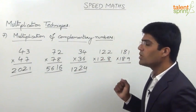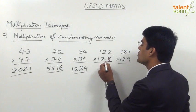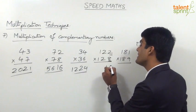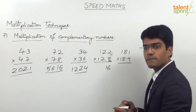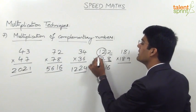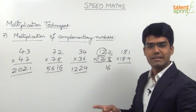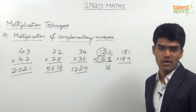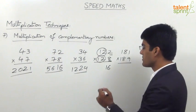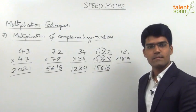For 122 into 128: the unit places are 2 and 8, so 2 into 8 is 16. The remaining part of the number is 12, and 12 into the next integer — 12 into 13 — is 156. So the answer here is 15616.